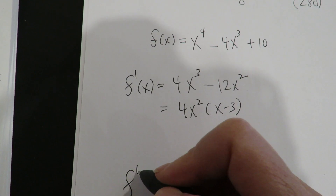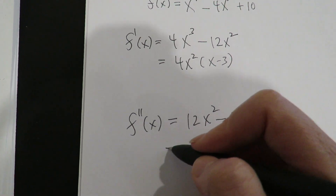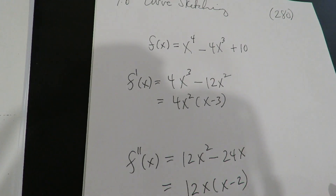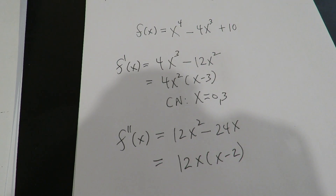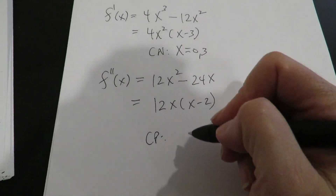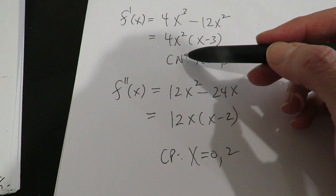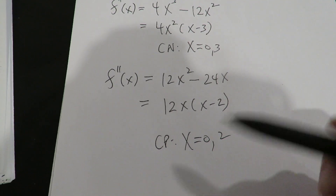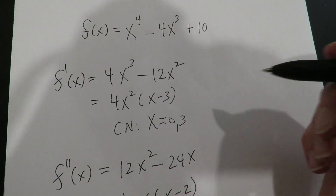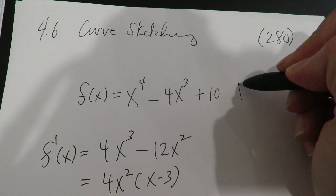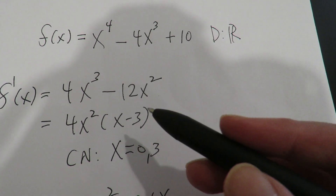From the first derivative, I have critical numbers of x equals zero and three. From the second derivative, I have critical points of x equals zero and two. Remember, for the first derivative it's best to call them critical numbers, and for the second derivative call them critical points. The process is the same but the significance of those points is a different concept. The domain of this function is all real numbers, which is important to note because if it's not all real, the domain will affect your analysis of the first and second derivative.